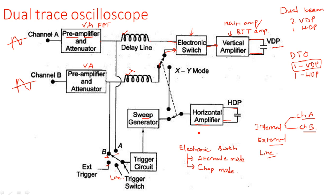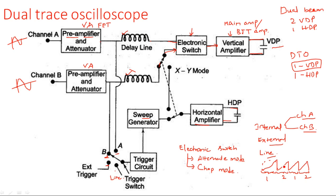In alternate mode, the sweep generator produces sweeps, and during the first sweep Channel A is selected, during the second sweep Channel B is selected, then Channel A, then Channel B — and so on. The electronic switch selects Channel A and Channel B alternatively depending on the sweep generator output. Since the sweep generator produces a sawtooth waveform, for the first cycle it selects Channel A, for the second cycle Channel B, alternating like that.